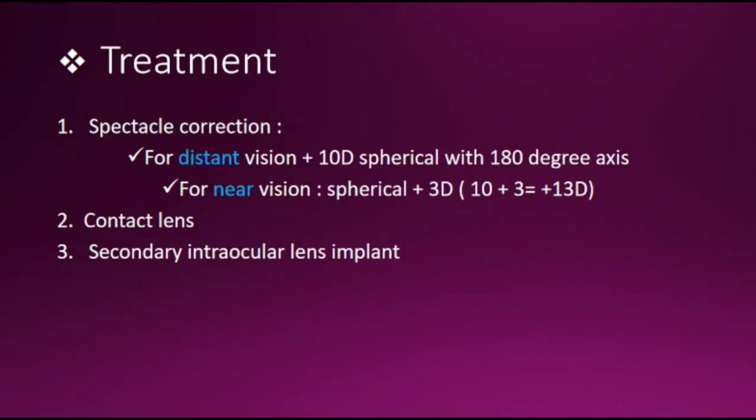Treatments include spectacle correction: for distant vision, plus 10 diopter spherical with 180-degree axis. For near vision, add spherical plus 3 diopter. So the total is plus 10 plus 3, equal to plus 13 diopters.